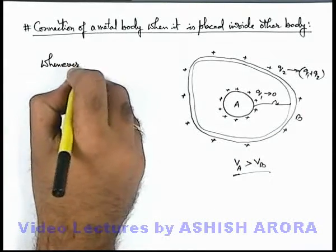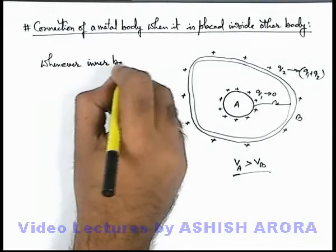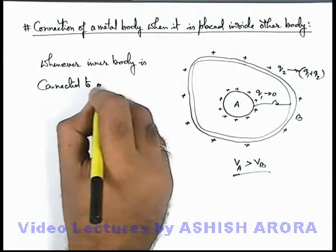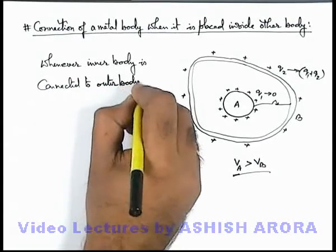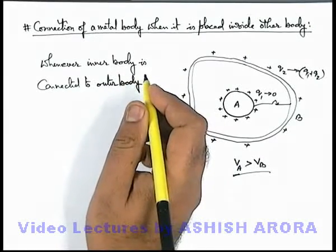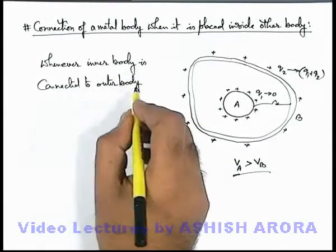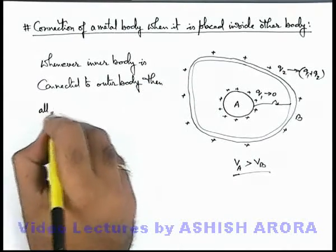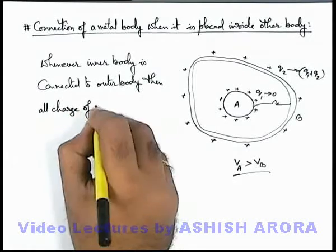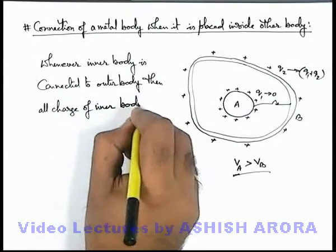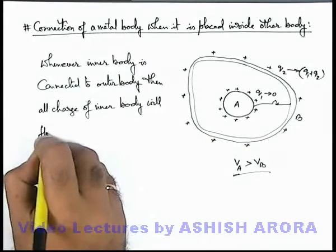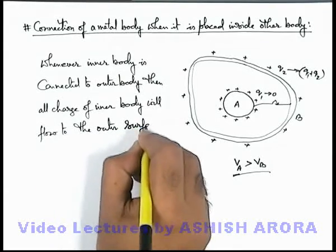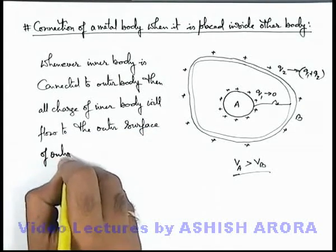Whenever inner body is connected to outer body - be careful here, we are talking about metal bodies only in which charge flow can take place - then all charge of inner body will flow to the outer surface of outer body.